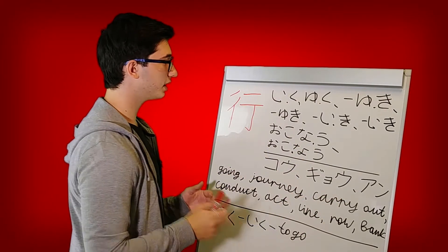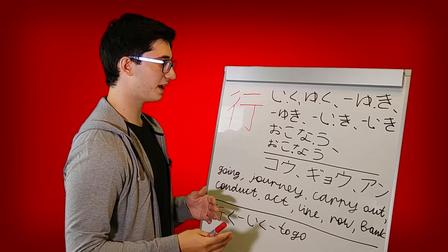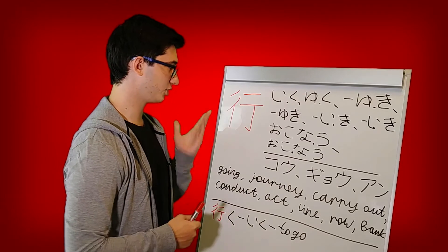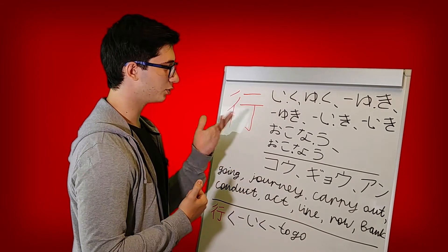But for now, all we're going to need is iku. There's also the word okonau, but that word is a bit more advanced, and I think if you're just learning this kanji, you're probably a beginner, so it's unlikely that you will need this word right now.